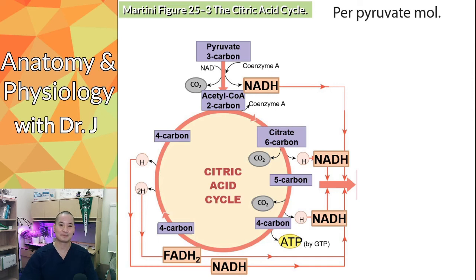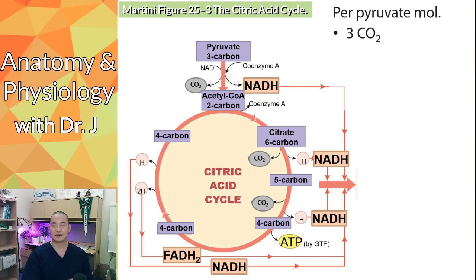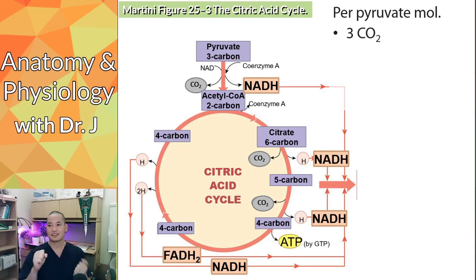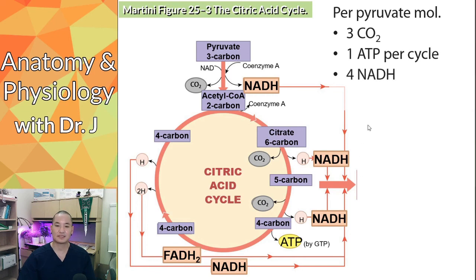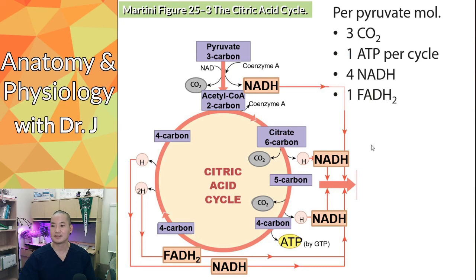The punchline: per pyruvate molecule, you generate carbon dioxide — which is why the original chemical equation shows CO₂. Since one glucose breaks into two pyruvates, and each pyruvate has three carbons, that's two times three = six carbon dioxide molecules. The citric acid cycle also generates ATP indirectly, but the main byproducts are NADH and FADH₂. Per glucose, multiply everything by two — you generate two ATP, but that's a drop in the bucket compared to what comes next.